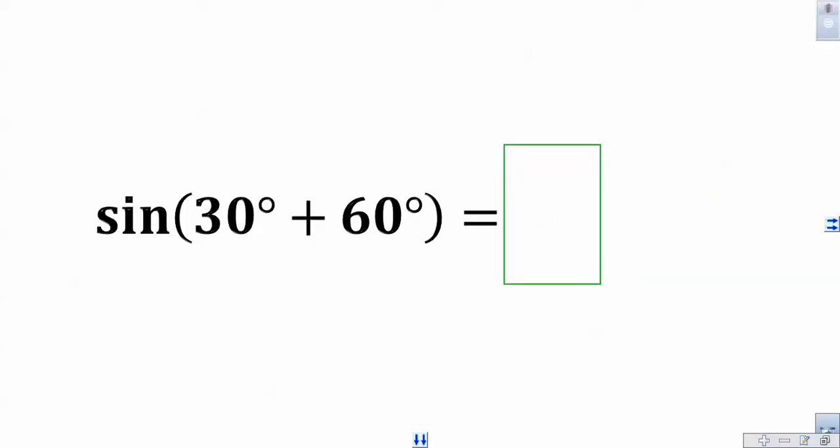So if I were to ask you what the sine of 30 degrees plus 60 degrees was, ideally what you do first is order of operations. You probably simplify inside the parentheses, get yourself a 90 there, and say hey wait a minute it's just 1.